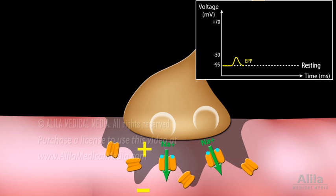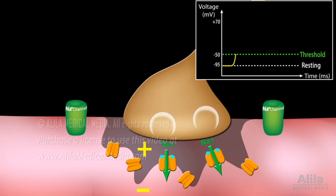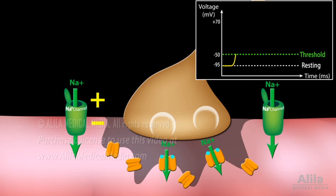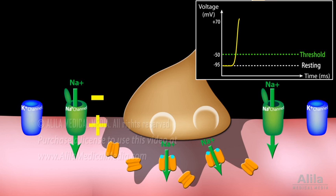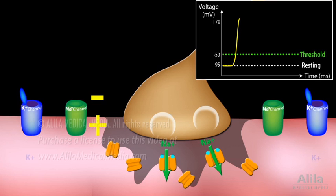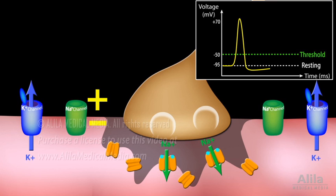An action potential is generated in the muscle cell only when the end plate potential reaches the threshold required to activate voltage-gated sodium channels located outside the end plate, in the neighboring membrane. When activated, these channels allow faster influx of sodium, further depolarizing and eventually reversing the polarity of the cell membrane. At this point, voltage-gated potassium channels open for potassium to move out, quickly returning membrane voltage to its original resting value.